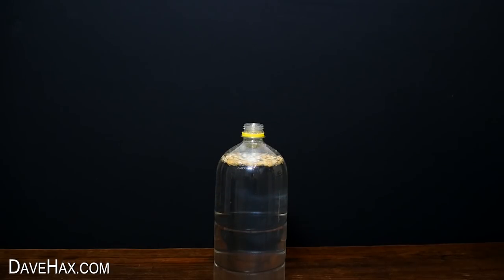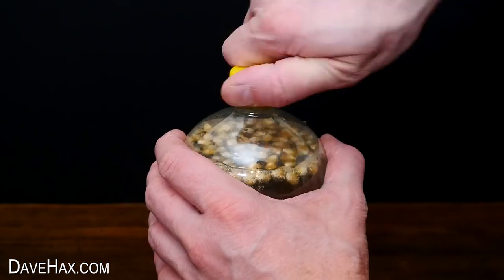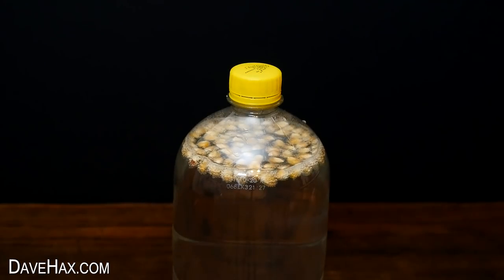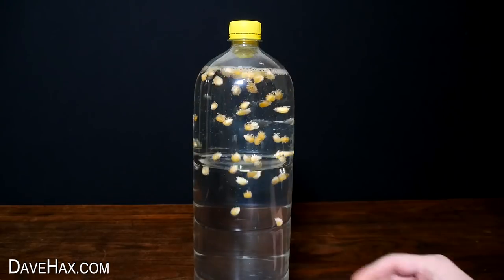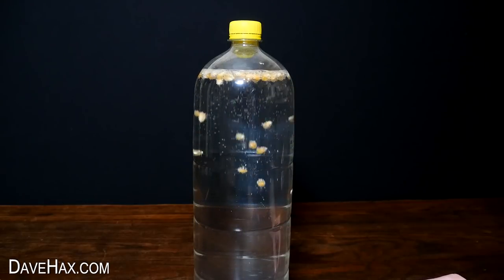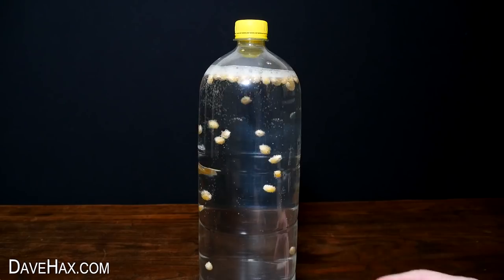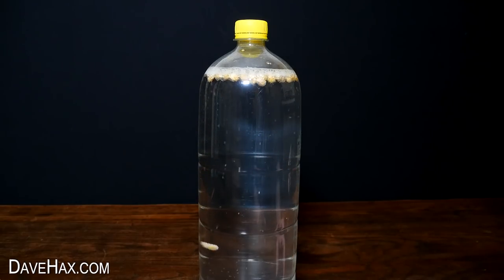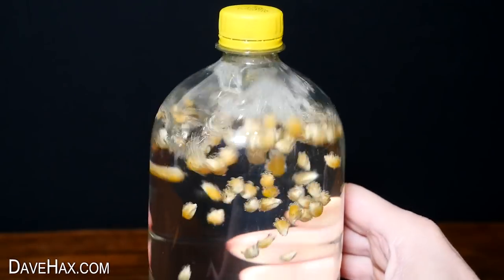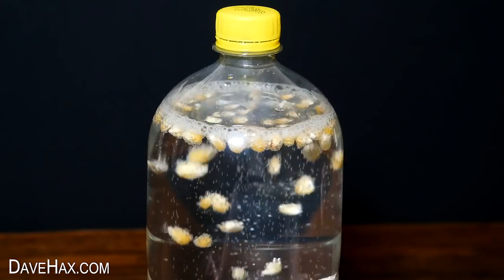Take the funnel out and screw the lid back on. Next ask your child to give the bottle a shake and watch as they fall down, then rise back up to the top. The small bubbles in the drink attach to the kernels and lift them back to the surface.